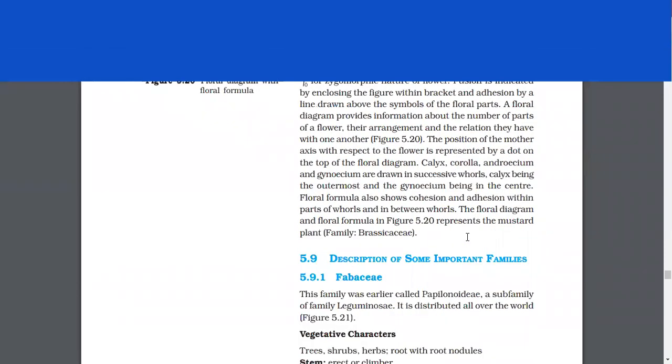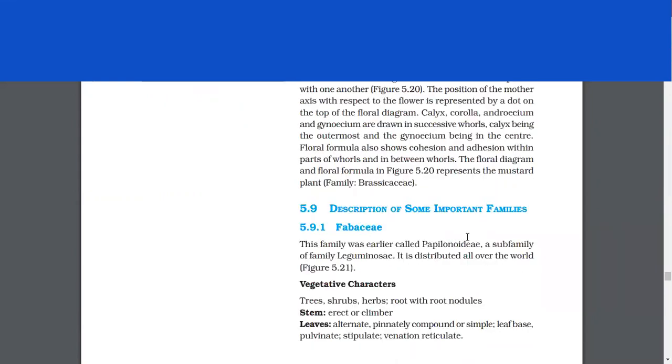Calyx, Corolla, Androecium and Gynoecium are drawn in successive whorls, Calyx being the outermost and the Gynoecium being in the center. Floral formula also shows cohesion and adnation within the parts of whorls and in between whorls. The floral diagram and floral formula in figure 5.20 represents the mustard plant which is family Brassicaceae.